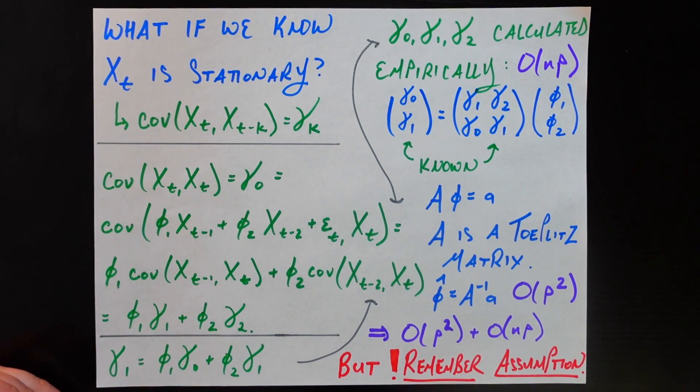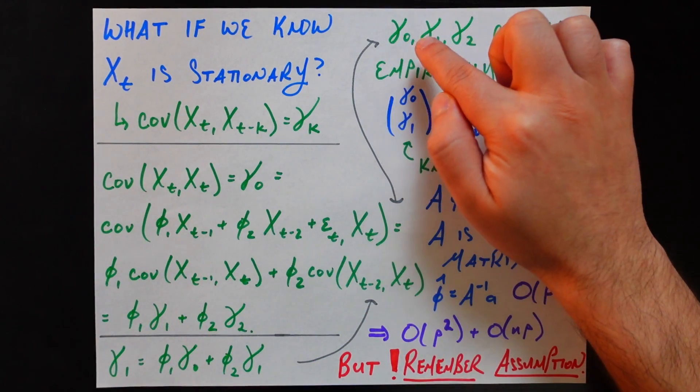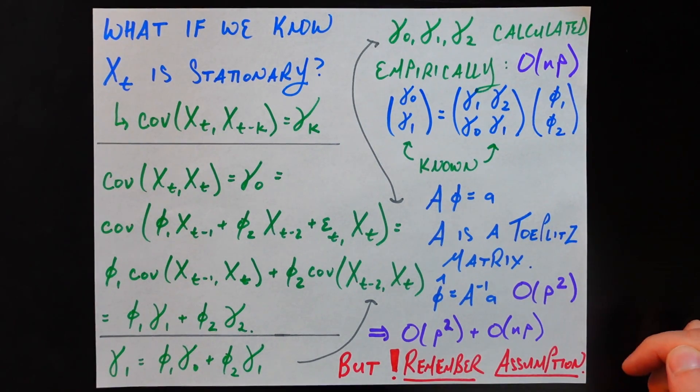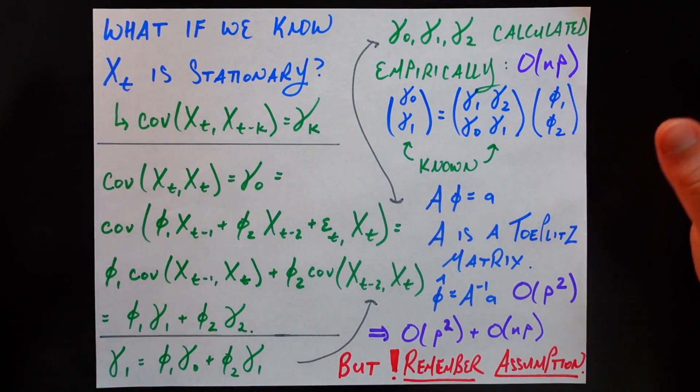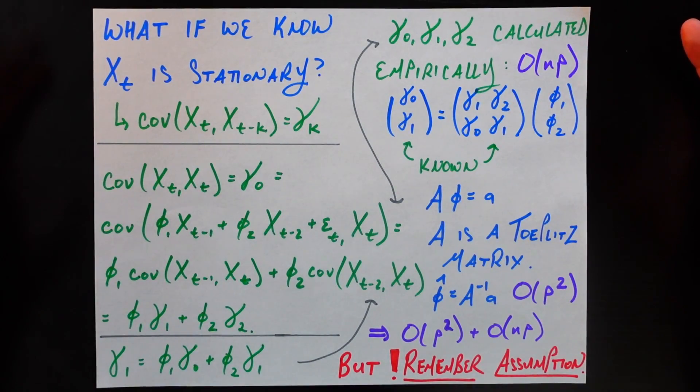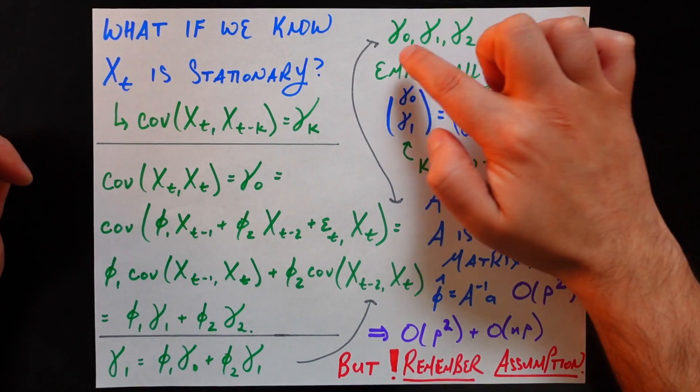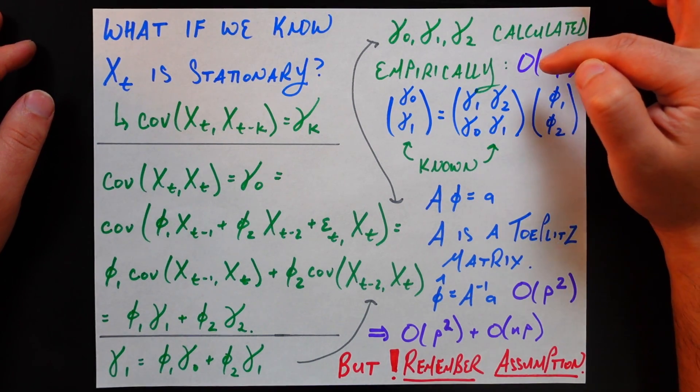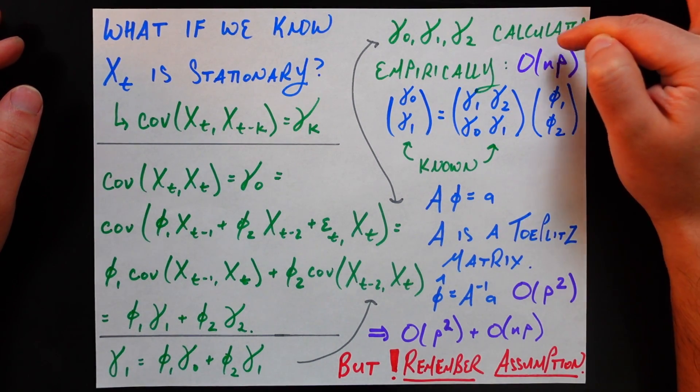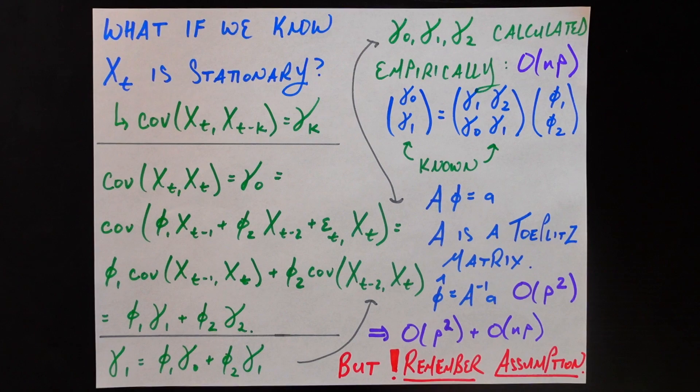Now there's a lot of symbols floating around, but let's keep stock of which variables we can calculate and which ones are unknowns. Now the gamma_0, gamma_1, gamma_2, what are those again? Those are the auto covariances between the time series and the lag version of the time series. Those can be calculated empirically. So we have all this data. We have our N by P matrix of data. So we can go ahead and just calculate those. And each one of those is going to be an O(N) operation. And how many of them are there? For a general AR(P) process, there's P of them. So to calculate those auto covariances empirically is going to be O(N times P). So that's going to be part of the computational complexity of the Yule-Walker equations and applying them to get the coefficients that we don't know.